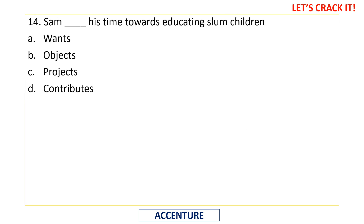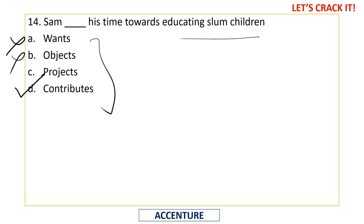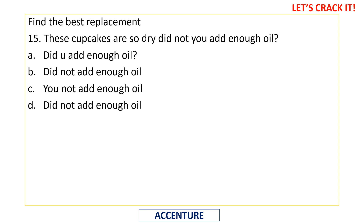14th question — fill the blank: 'Sam blank his time towards educating slum children.' The sense is that Sam is allocating some of his time to educate slum children. 'Wastes his time' is wrong; 'objects' means he is against it — wrong. The correct answer is option D: 'Sam is contributing his time towards educating slum children.'